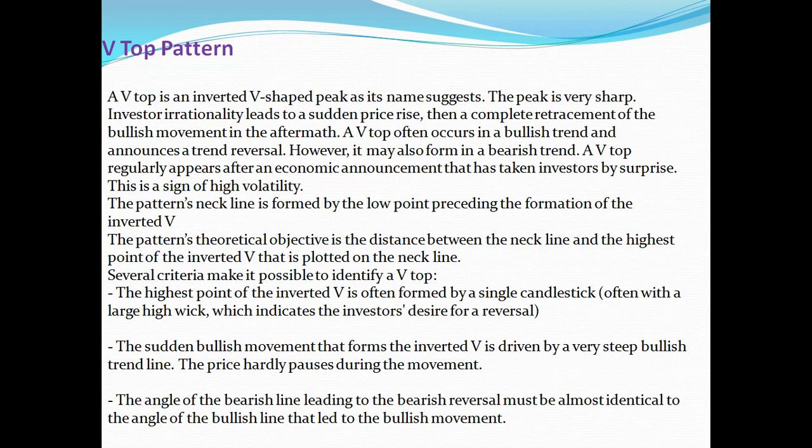V top is an inverted V shape peak. As its name suggests, the peak is very sharp. Investor irrationality leads to a sudden price rise, then a complete retracement of the bullish movement in the aftermath. A V top often occurs in a bullish trend and announces a trend reversal. However, it may also form in a bearish trend. A V top regularly appears after an economic announcement that has taken investors by surprise — this is a sign of high volatility.